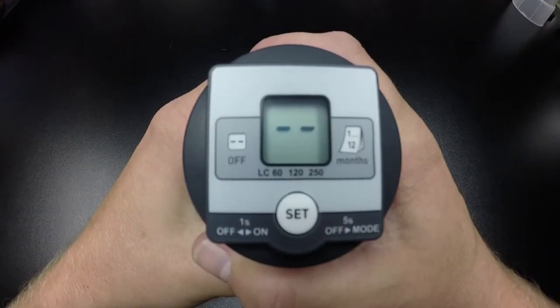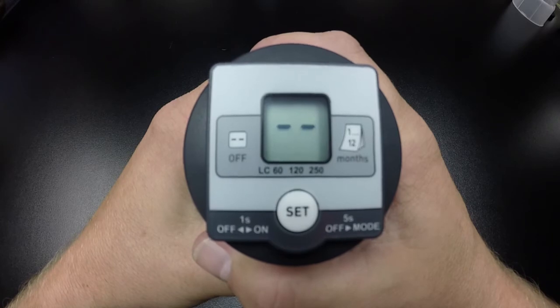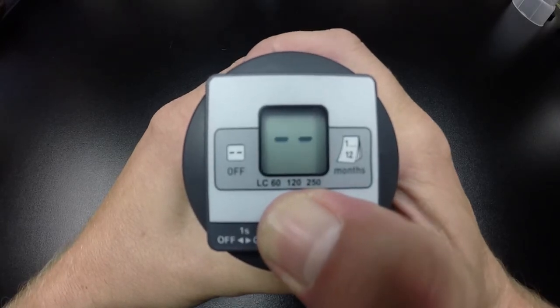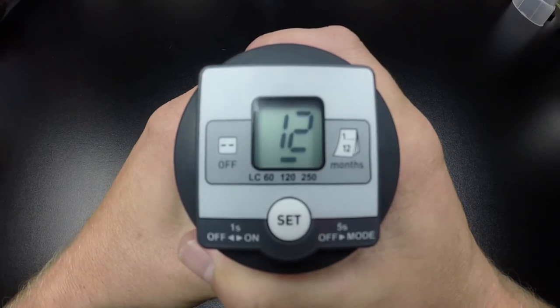To begin operation, the lubricator will be off as displayed by the double lines. Turn the lubricator on by holding the set button for one second until the double lines are off the screen. Release the set button.